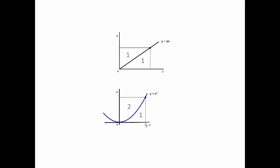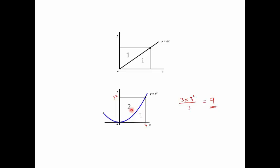To use this to find an area: suppose the x-value is 3 and you want the area under y equals x squared. Since the ratio is 2 to 1, the area under the curve is one third of the whole rectangle. The rectangle's area is 3 times 3 squared, because y equals x squared, so we simply take one third of that to get the area. Even quite young children can handle this. The other area — between the curve and the y-axis — is two thirds of the rectangle. In general, the ratio of areas is n for y equals ax to the n.